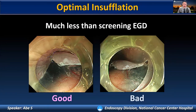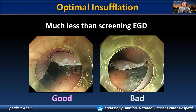Our next topic is technical tips and tricks to perform safe and efficient esophageal ESD. The first point is optimal insufflation. The optimal inflation level for esophageal ESD is much lower than for screening and diagnostic EGD. Less air insufflation will make the submucosal space thicker and softer, which allows us to facilitate esophageal ESD. Let me show you the video.